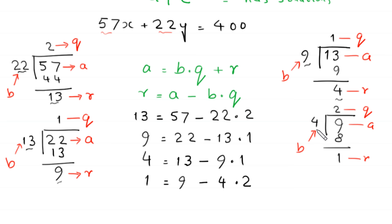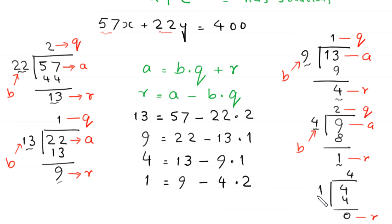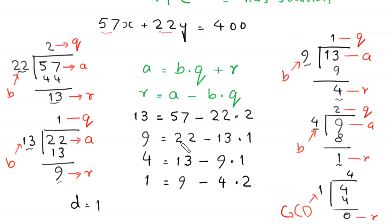Now we divide 4 by 1: 4 divided by 1 gives 1 four times, so we get remainder 0. Since the remainder is 0, we stop the process. This 1 is the GCD, so we write d = 1. Now we can find a solution of this equation using these equations.